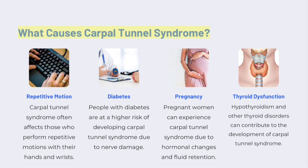What Causes Carpal Tunnel Syndrome? Repetitive Motion: Carpal Tunnel Syndrome often affects those who perform repetitive motions with their hands and wrists. Diabetes: People with diabetes are at a higher risk due to nerve damage. Pregnancy: Pregnant women can experience Carpal Tunnel Syndrome due to hormonal changes and fluid retention.